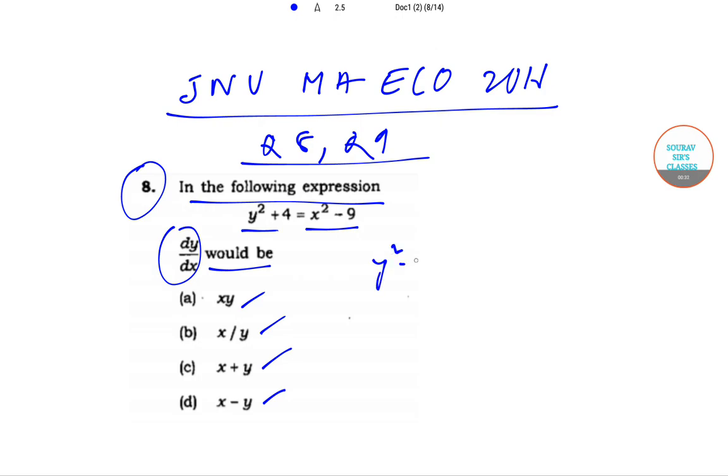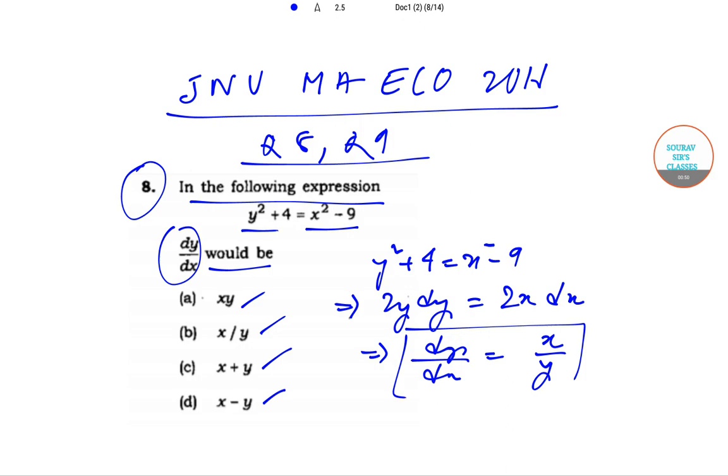It has been given that y square plus 4 is equal to x square minus 9. So this implies that twice of y dy is equal to twice of x dx. If we write dy by dx, it will be equal to x by y, which is option b.